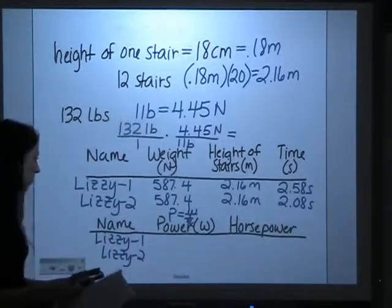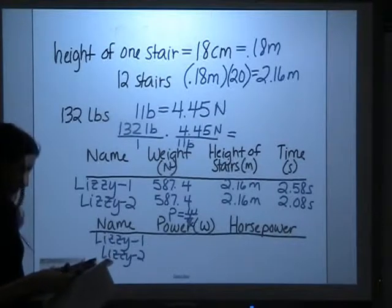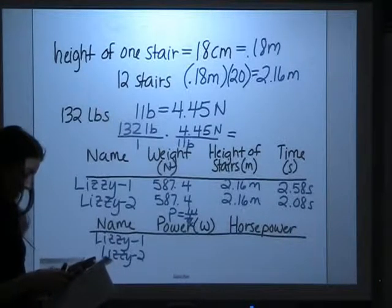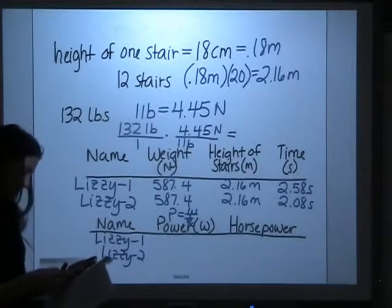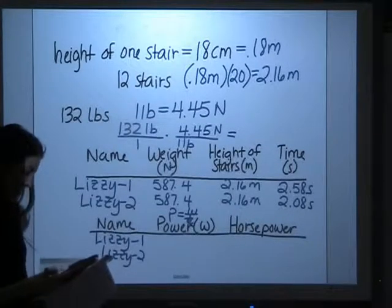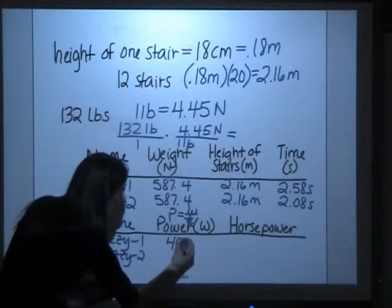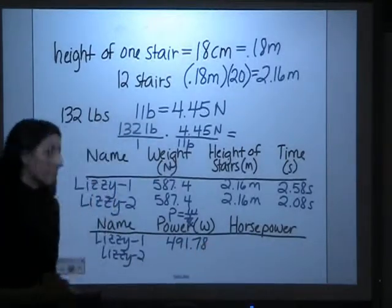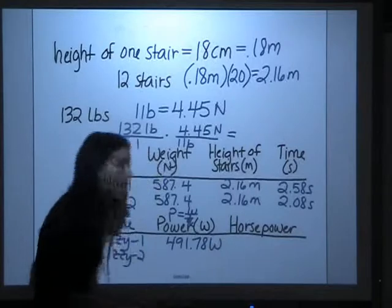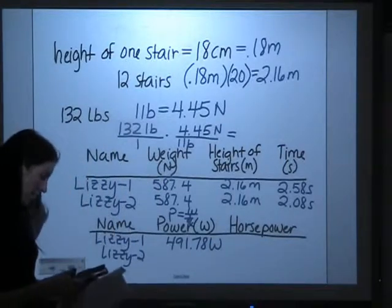So let's calculate Lizzie's power for the first trial. 587.4 times 2.16 divided by 2.58 gives her power at 491. We'll go with two decimal places, .78, and power is in watts.